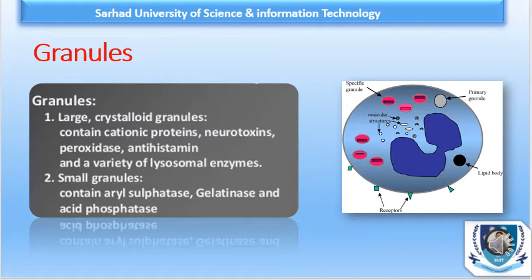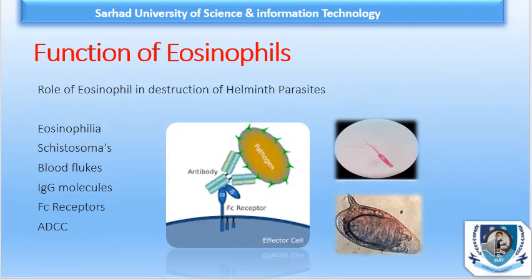In this lecture, we will discuss the most important secretory granules of eosinophil in more detail. The main role of eosinophil is the destruction of helminth parasites. As discussed in lecture number one, there is a combat between schistosoma and eosinophil, and we have antibody-dependent infections.